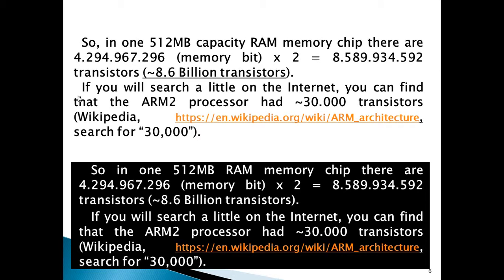If you search on the internet, you can find that the ARM2 processor had about 30,000 transistors. Please search on Wikipedia at the provided link and search for 30,000.